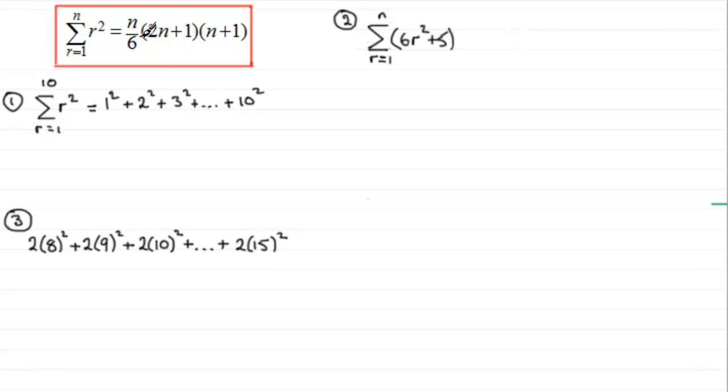So we've got 10 terms here, n is 10, and using this formula, it turns out to be n over 6, so that's going to be 10 over 6 multiplied by 2n plus 1, so that's going to be 2 times 10 plus 1, and then we multiply that by n plus 1, so that's going to be multiplied by n, which is 10, plus 1. And if you work this out on your calculator, you'll find you get 385.